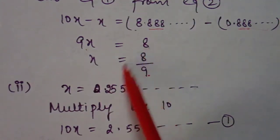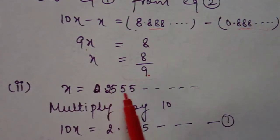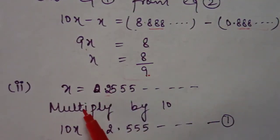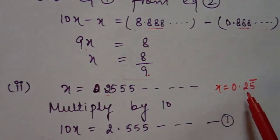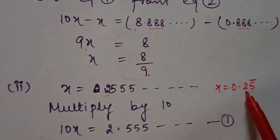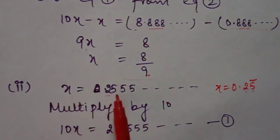Second question: x equals 0.2555... Here only 5 is repeating infinitely, but 2 is not repeating, so x equals 0.25 bar. According to the rule, only the bar number should be on the right side of the decimal. One number is present without the bar, so we multiply both sides by 10: 10x equals 0.555 and so on. This is equation number 1.